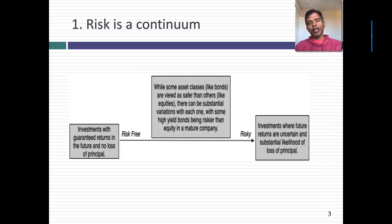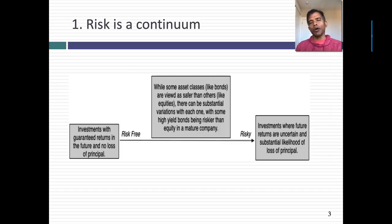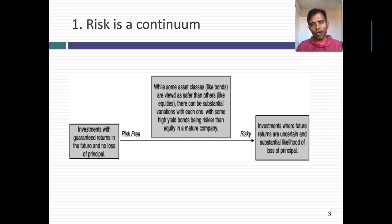In traditional finance, to make lives convenient for ourselves, we assume that there are risk-free investments, and we usually assign this category to government bonds. Implicit there is the assumption that governments don't default, and that the returns we're talking about are nominal returns. After all, the rate on a government bond might be guaranteed, but if inflation is uncertain, your real rate of return might not be. But the question of whether there's anything truly risk-free is for a different session. When you think about risk, think about it on a continuum.